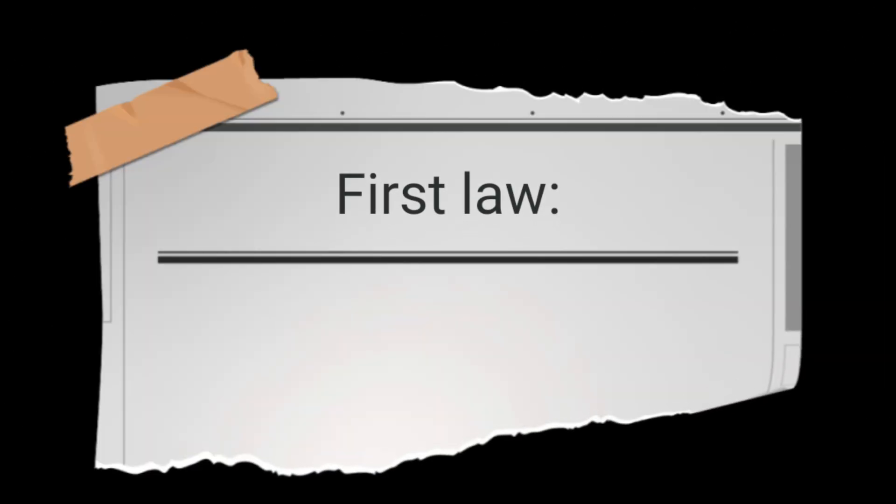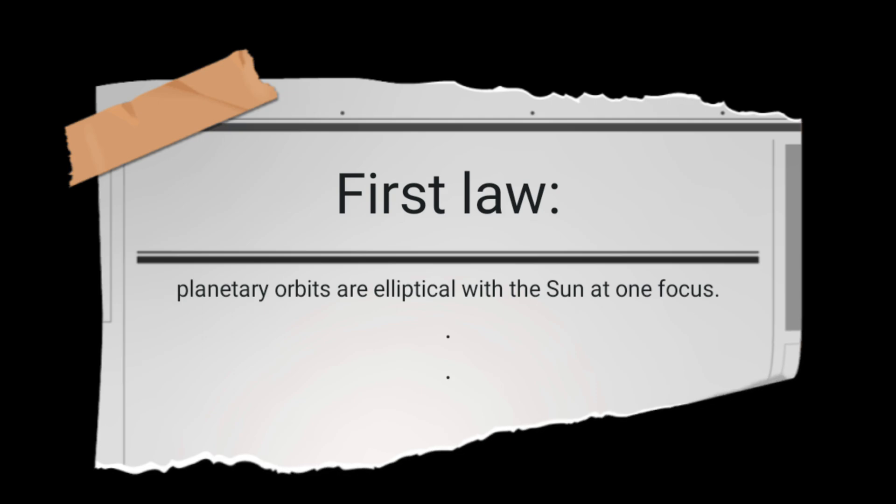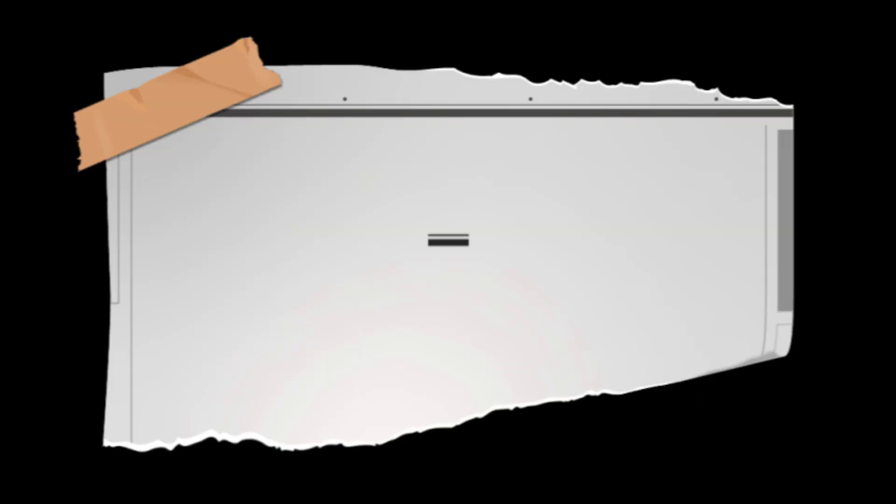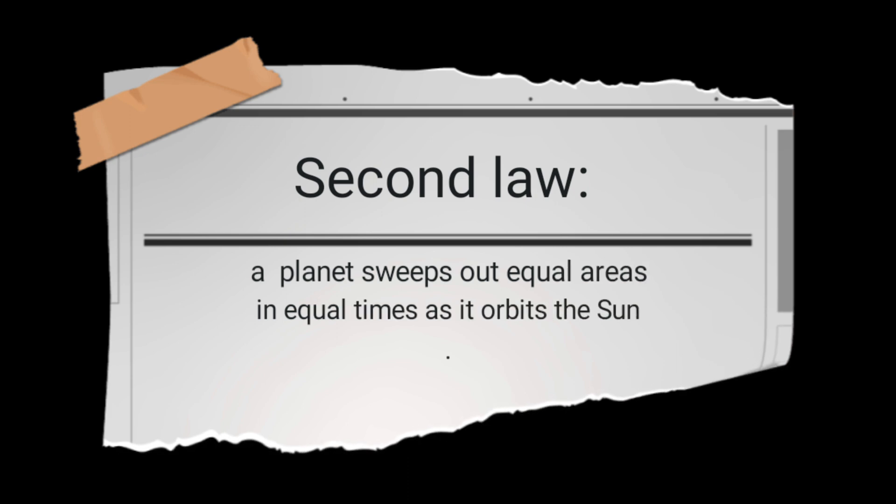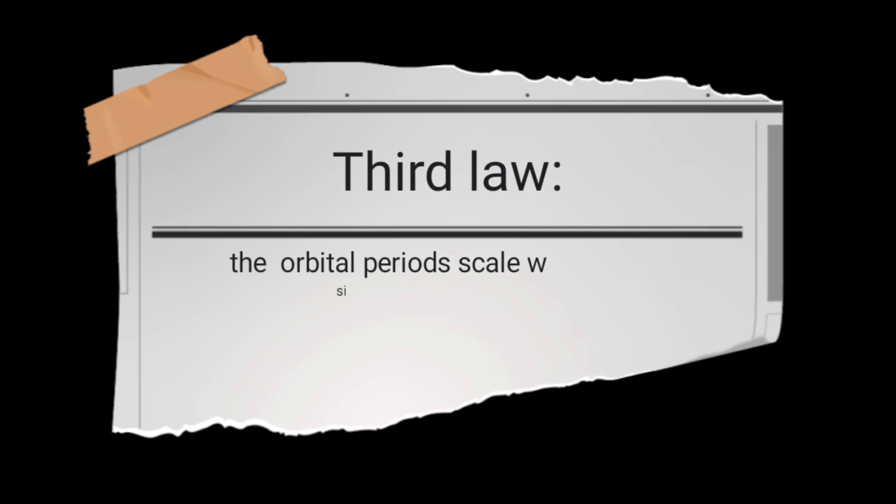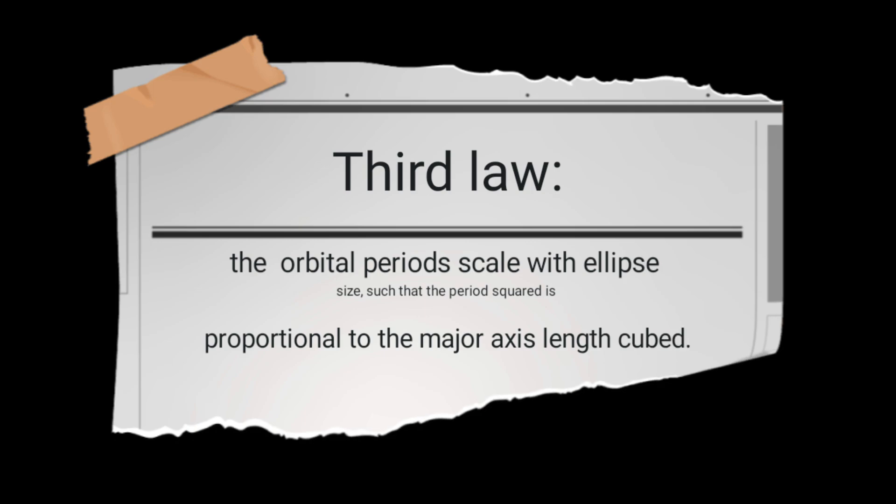Kepler's Laws: First law, planetary orbits are elliptical with the sun at one focus. Second law, a planet sweeps out equal areas at equal times as it orbits the sun. Third law, the orbital period scales with ellipse size, such that the period squared is proportional to the major axis length cubed. Orbits.